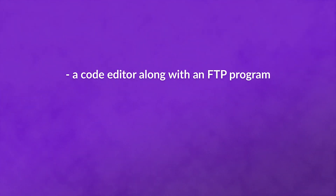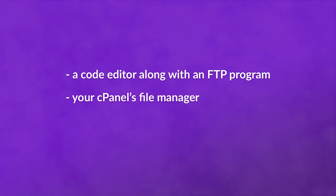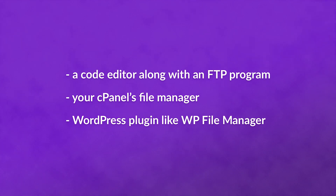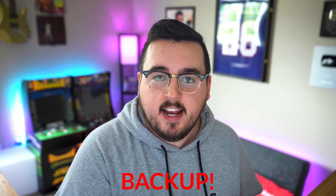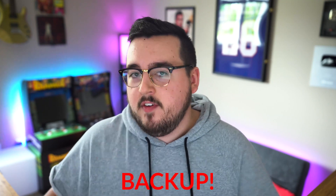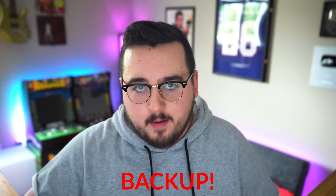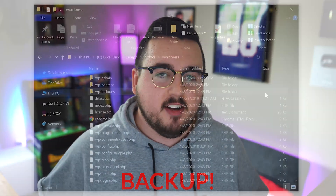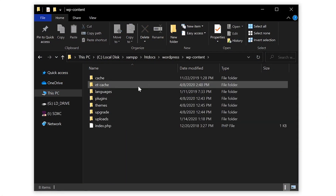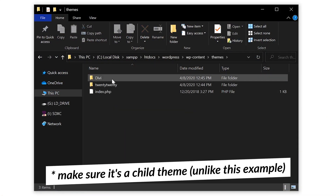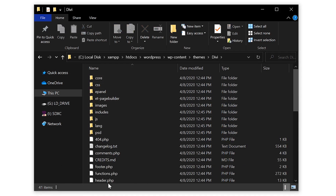Editing your functions.php file is very easy and you have multiple options to do so, including a code editor with an FTP program, your cPanel's file manager, or a WordPress plugin like WP File Manager. Regardless of the method you choose, you 100% want to create a backup of both your site and the file itself to prevent any catastrophic loss of data. You can find your functions.php file in your wp-content/themes folder.